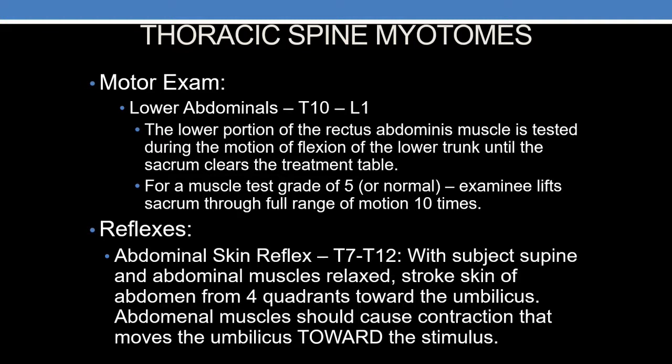Even though there are no radicular syndromes of the thoracic spine formally reported in the AMA guides, it is not impossible to have radicular syndromes of the thoracic spine, and these examination maneuvers assist in conclusions for permanent impairment. There are no known reflexes to test, so we won't find hypo- or hyperreflexia in the thoracic spine. However, we could find losses of sensation on dermatome testing and losses of motor power on global manual muscle testing.